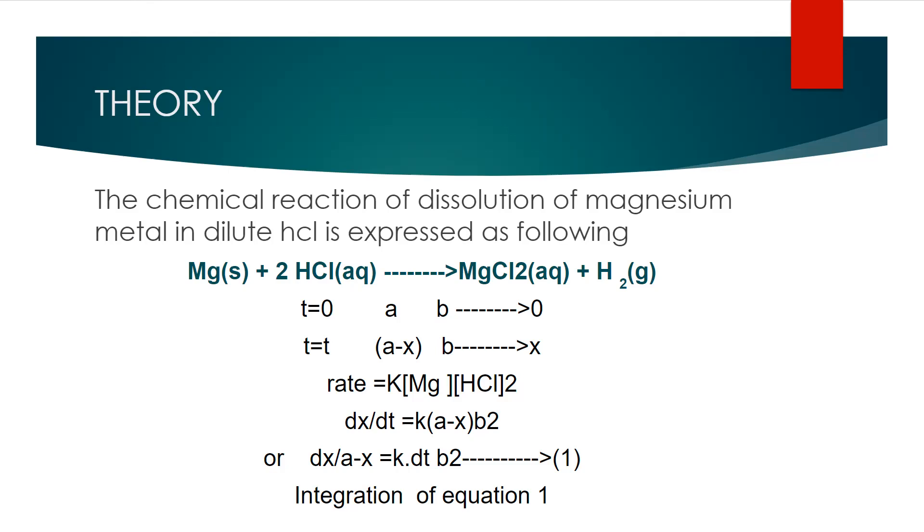By rearranging this equation we will get equation number one which is dx/(A-x) equals K multiplied by dt multiplied by b².